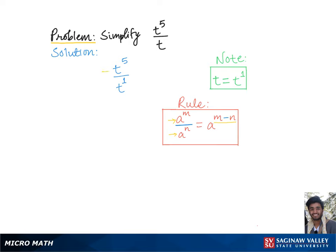Here in our problem, we have two exponents with common base t in the form of a quotient. So to simplify this, we will keep the common base t and subtract the exponent in the denominator, that is one, from the exponent in the numerator, that is five, which gives us the final answer: t to the fourth.